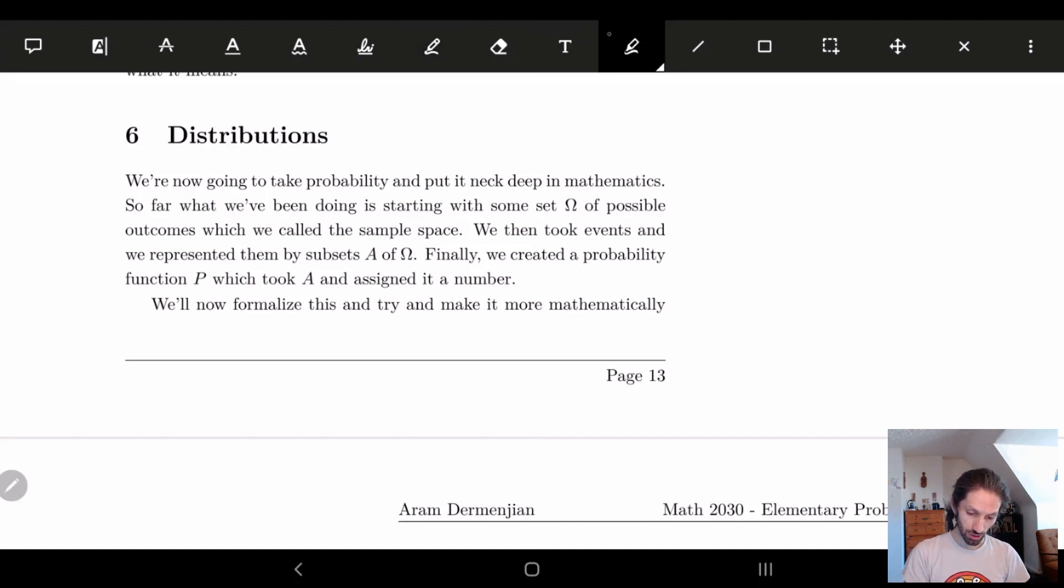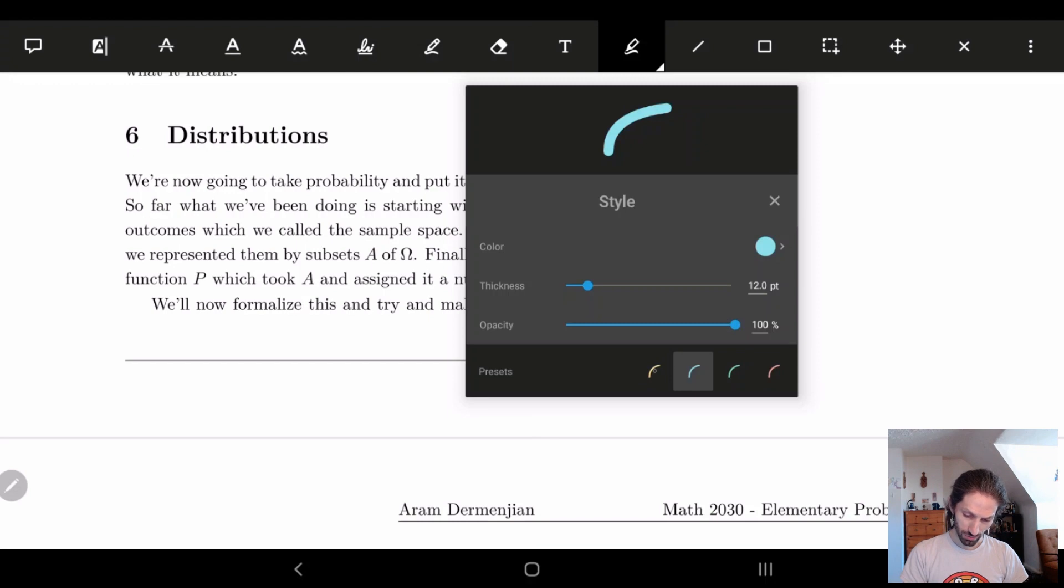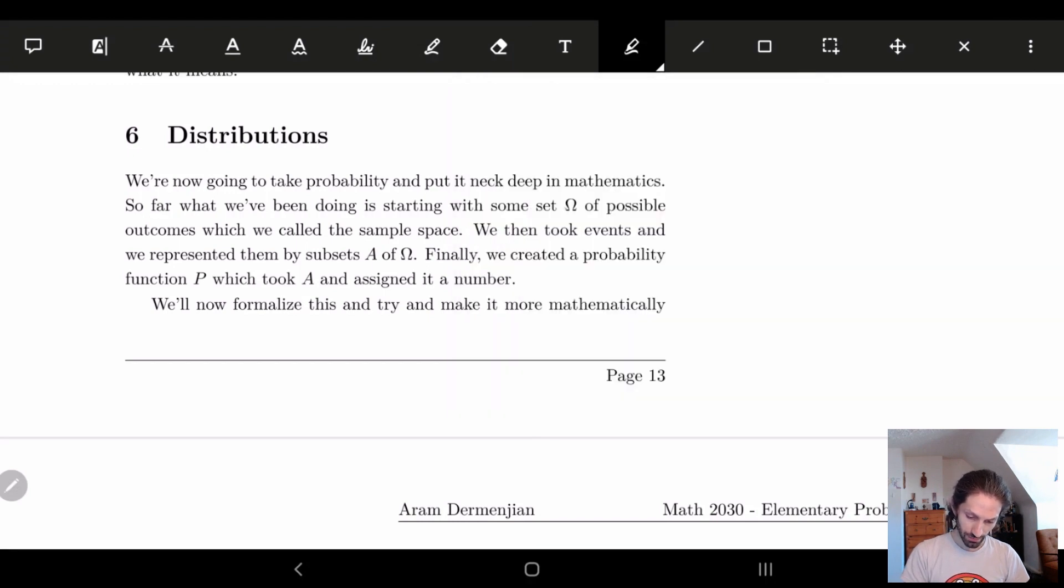So let's review, since it's probably been a while since you saw some of these sets or symbols. Omega, remember, is a set of possible outcomes, which we call the sample space. The set A, which is a subset of omega, we called the events. And what we had was we were trying to figure out the probability of an event A occurring in this omega sample space.